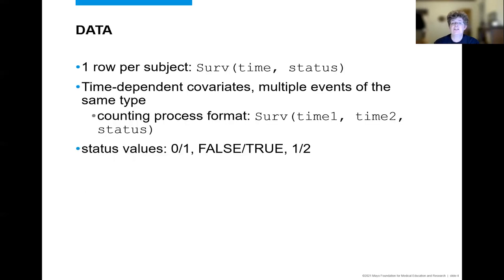The data format for classical survival analysis often consists of one row per subject, with a time variable and a status variable indicating event or censor, plus covariates. More complex models, such as with time-dependent covariates or multiple events of the same type, use the counting process style of endpoint that includes a start time, stop time, and status for that interval. The status variable can have the value 0, 1, false, true, or 1, 2, where the second level indicates that an event was observed.